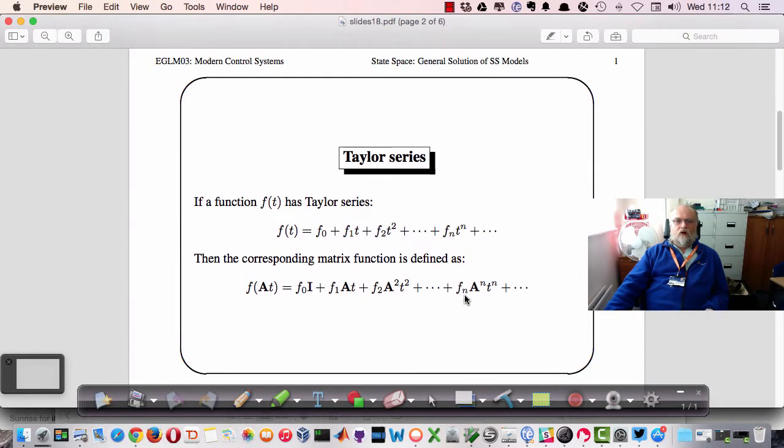For this we're going to start off by looking at the Taylor series which is used to define things like the exponential function. We have this formula for Taylor series which says that any function f of t can be defined as f0 plus f1 t plus f2 t squared and so on, where the fi values here depend on the nature of the function.